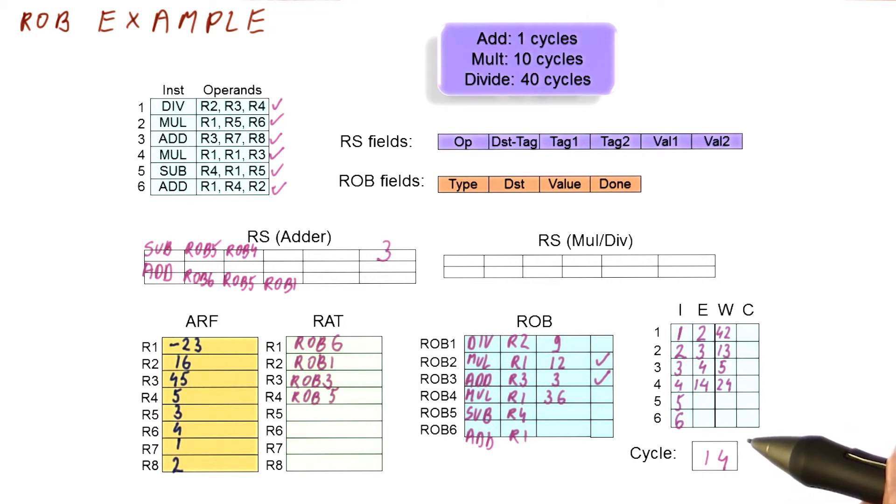In fact, nothing will happen until we have another broadcast of a result. And the results we will broadcast eventually are going to be in 42 and 24, 24 comes first. So let's see what happens in cycle 24.